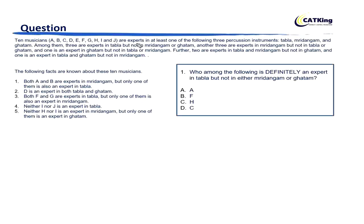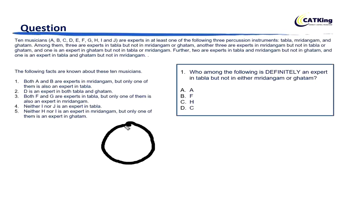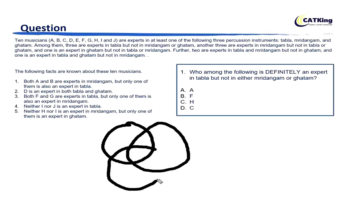So till here we can see that we can draw a Venn diagram — classic case of Venn diagram here. Further, two are experts in Tabla and Mridangam but not in Ghatam, and one is an expert in Tabla and Ghatam but not in Mridangam. Let's draw a Venn diagram: this is Tabla, this is Mridangam and this is Ghatam.